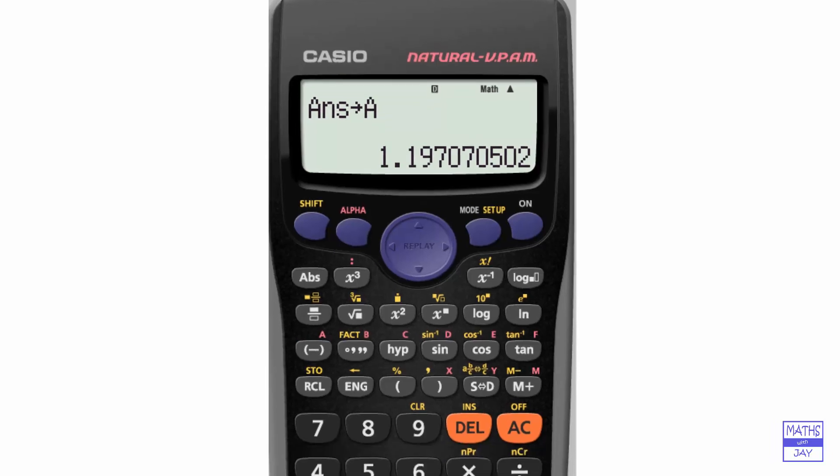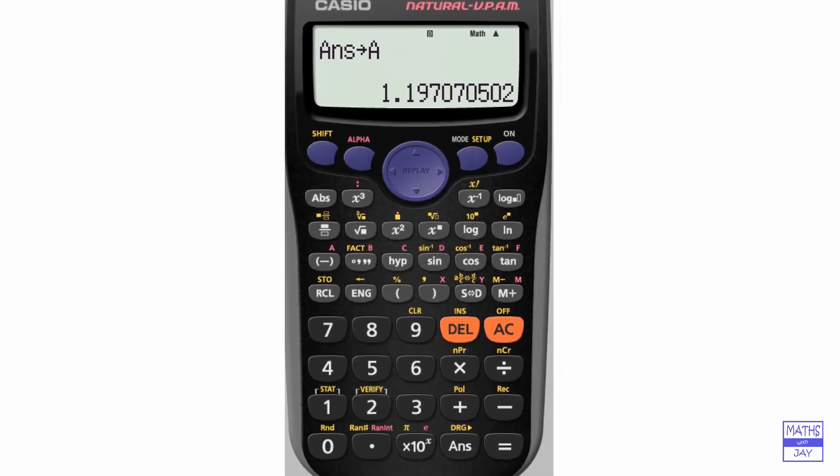Then we can do another calculation. This time we've got 4.7 sin 11. Just to show that you don't need to do the equals, this time we'll just directly store this. Shift and store, and this time we'll go for memory B. You can see that we've still got the answer to the calculation and we've shown that we've stored the answer in memory B. If you know you want to store something in a memory, there's no need to do the equals before the storing. So we've got something in memory A and something in memory B.